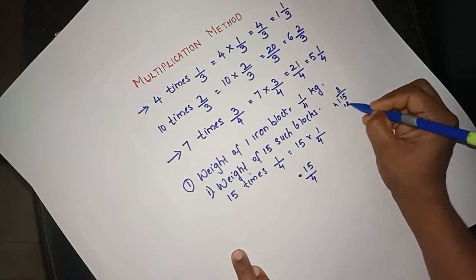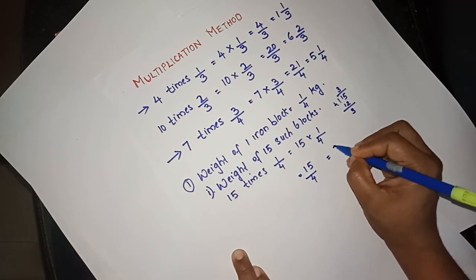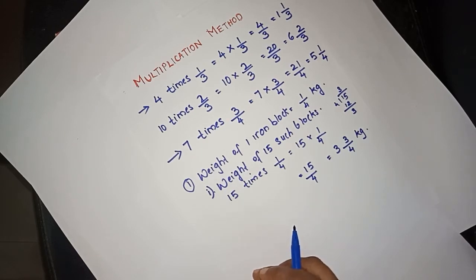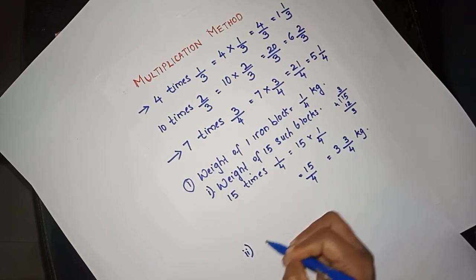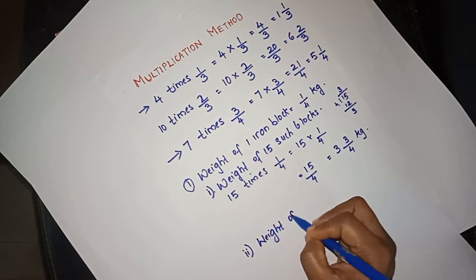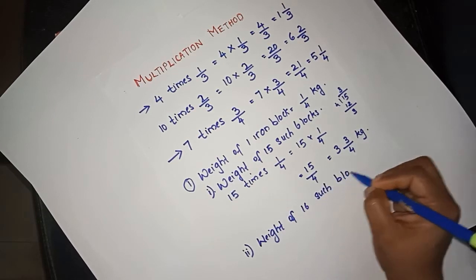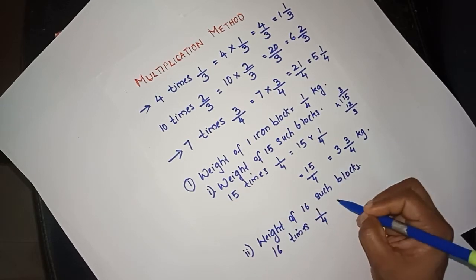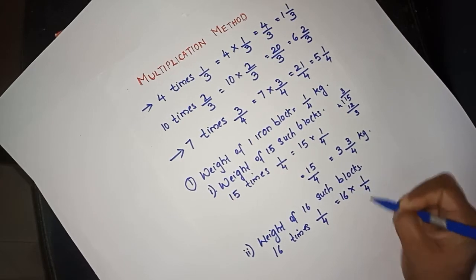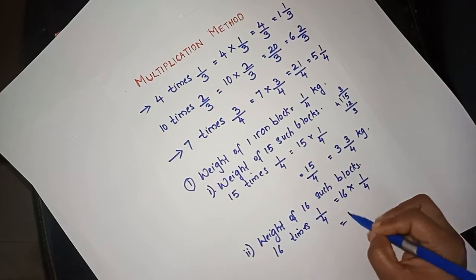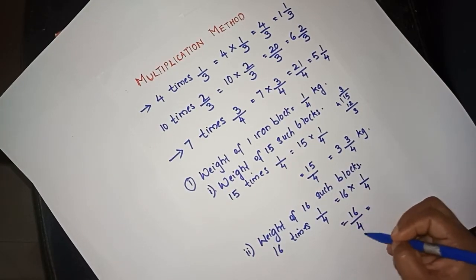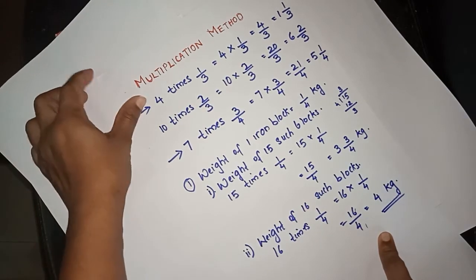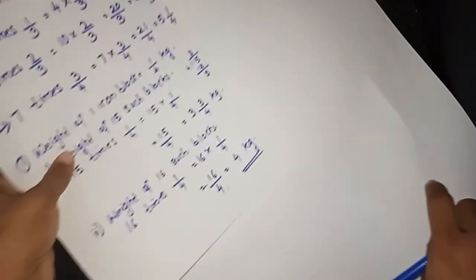Sub-question: what about 16 blocks? 16 times 1/4. 16 into 1/4 is equal to 16/4, which equals 4 kg. We will solve the two sub-questions with the same method.